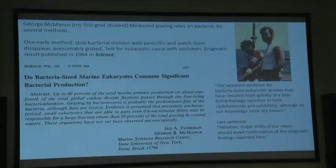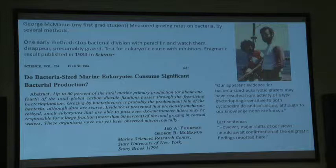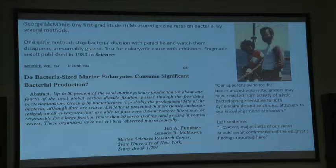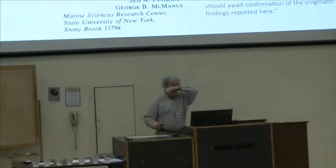My first graduate student, George McManus — now a professor at the University of Connecticut — was doing several experiments. In one of them we used penicillin to stop the growth of bacteria and watch the bacteria disappear. The disappearance, we thought, was because of grazing. The experiments seemed to work beautifully. When you added the penicillin, you'd watch the bacteria disappear. If you filtered out the grazers, you'd get a reduced disappearance rate, but they still continued to disappear even when the grazers were gone. We did experiments using eukaryotic inhibitors — cyclohexamide and colchicine — and found that those would stop the predators from eating the bacteria. Oddly enough, even in 0.6-micrometer filtered seawater where there were no eukaryotes at all, we had about half the loss rate.